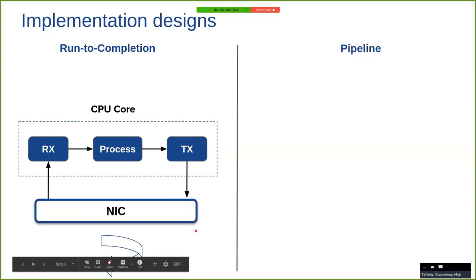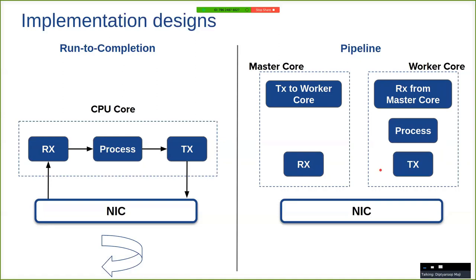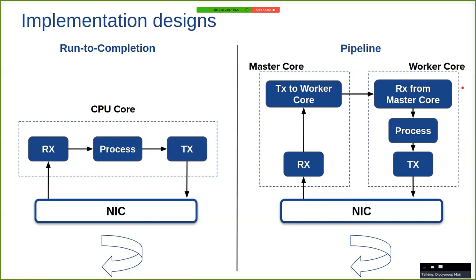Whereas in the pipeline model, there are at least two cores involved. Let us assume there are only two cores: one master core and one worker core. Whenever the NIC receives a batch of packets, the master core receives those packets in the user space from the NIC and then transfers those packets to the worker core. The worker core will then receive those packets from the master core, process them, and transmit them out via the NIC. And this cycle continues.